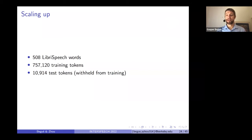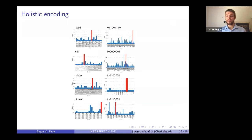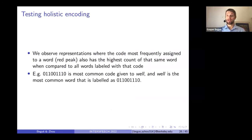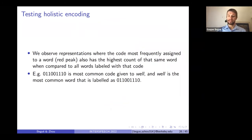How does this scale up to larger models? We trained another model on about 500 LibriSpeech words — a much larger model — and we get very interesting representations where the code most frequently assigned to a word also has the highest count of that same word compared to all words labeled with that code. There is evidence of lexical learning in the larger model as well. For example, code 0110011110 is the most common code given to the word 'well,' and 'well' is the most common word labeled with this code.